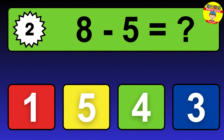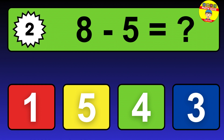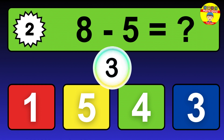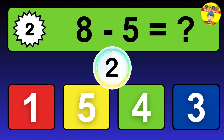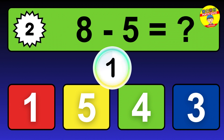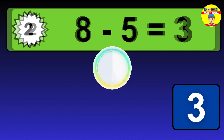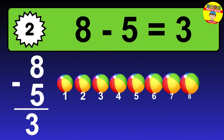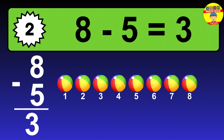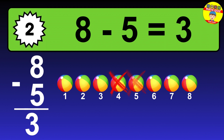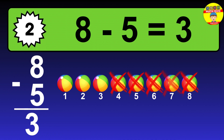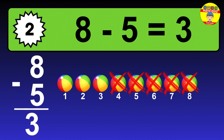Question 2. 8 minus 5 equals what? The answer is 8 minus 5 is 3. Let's count it: 1, 2, 3.